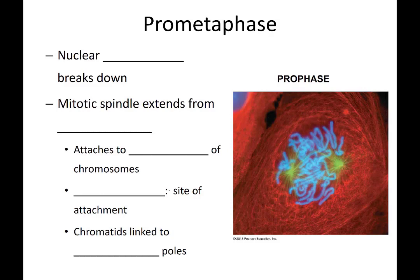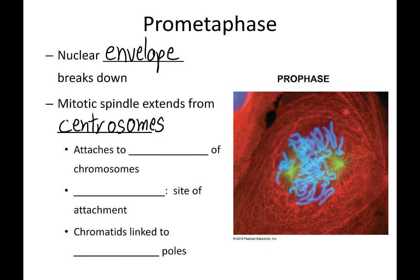The next phase of mitosis is prometaphase. In prometaphase, the nuclear envelope breaks down. The mitotic spindle extends from the centrosomes and attaches to the centromeres of the chromosomes. Specifically, the microtubules attach at the kinetochores, which are found on either side of the centromeres. By having microtubules attached to the kinetochores, the chromatids are linked to opposite poles of the cell.